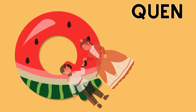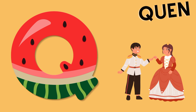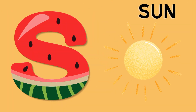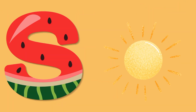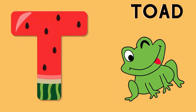Q is for queen, k-k-queen. R is for rabbit, r-r-rabbit. S is for sun, s-s-sun. T is for toad, t-t-toad.